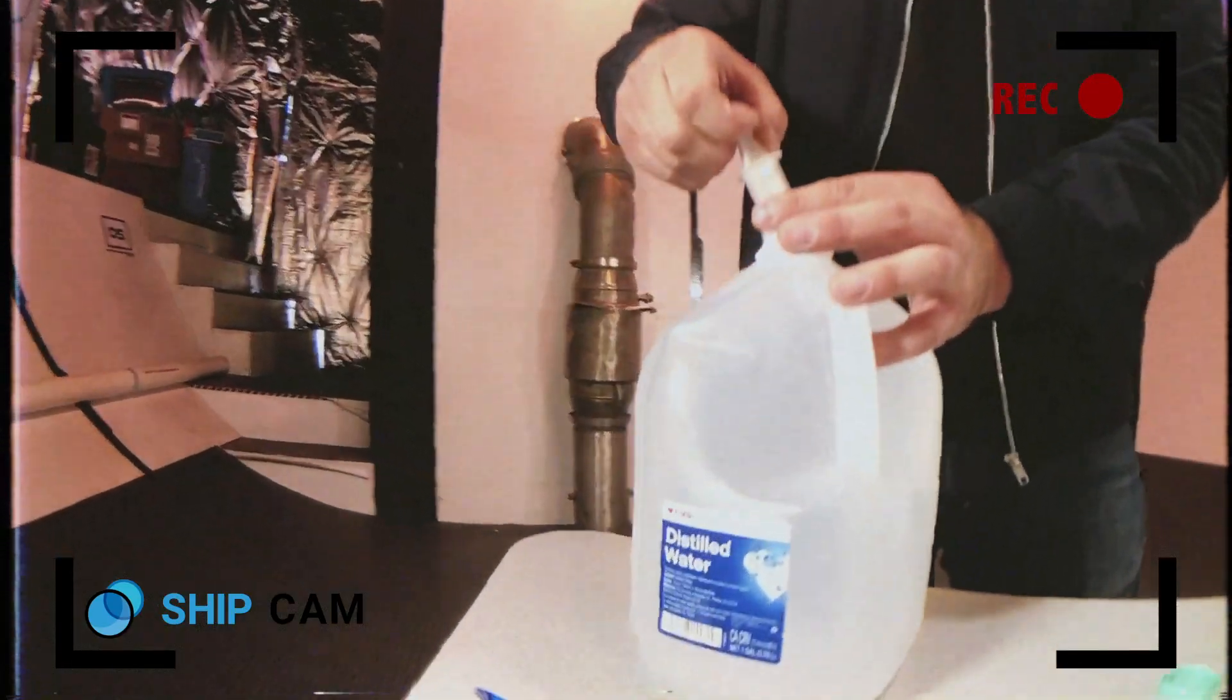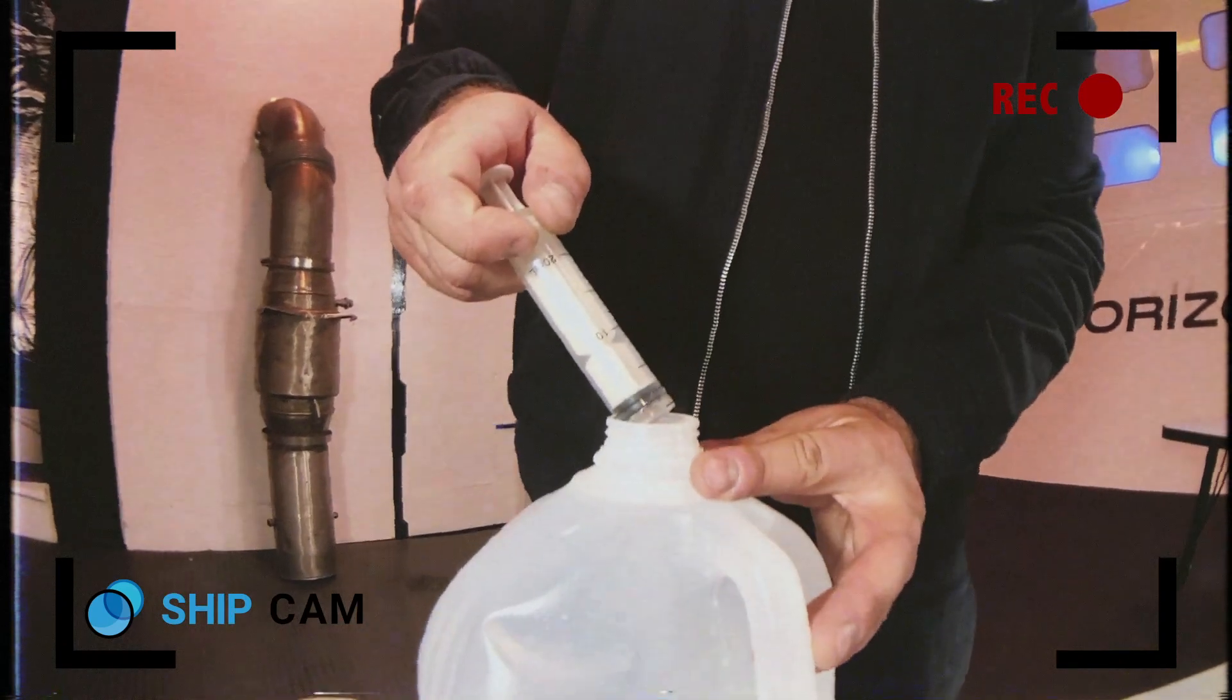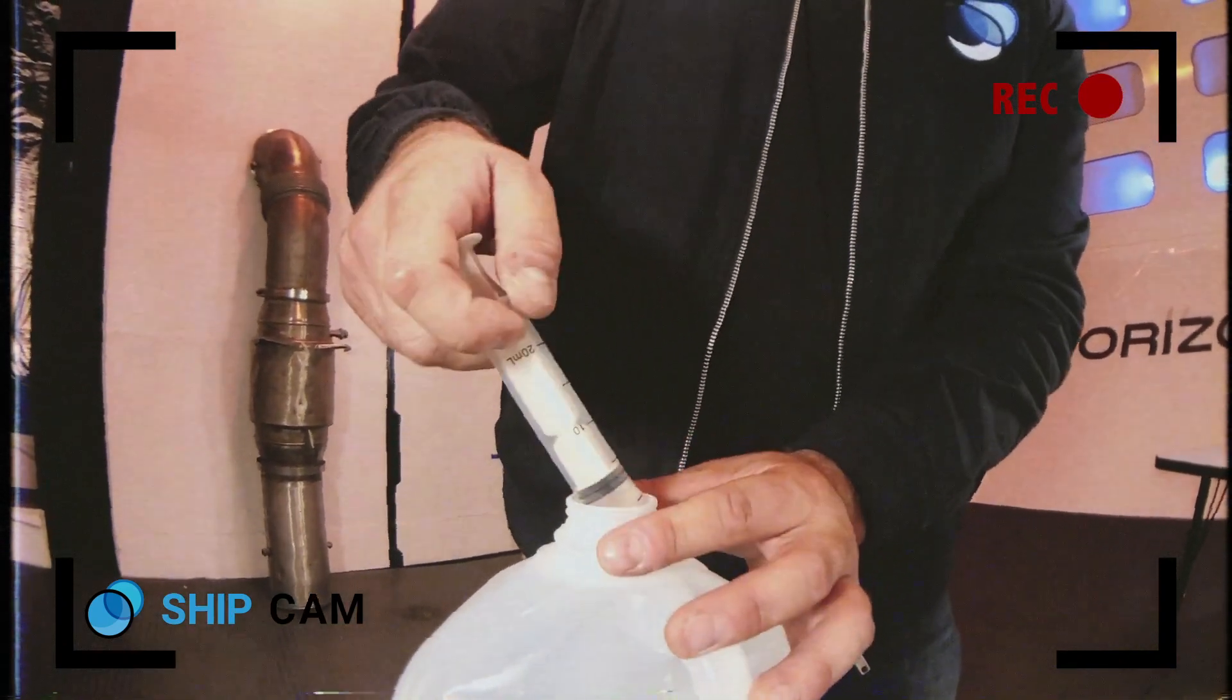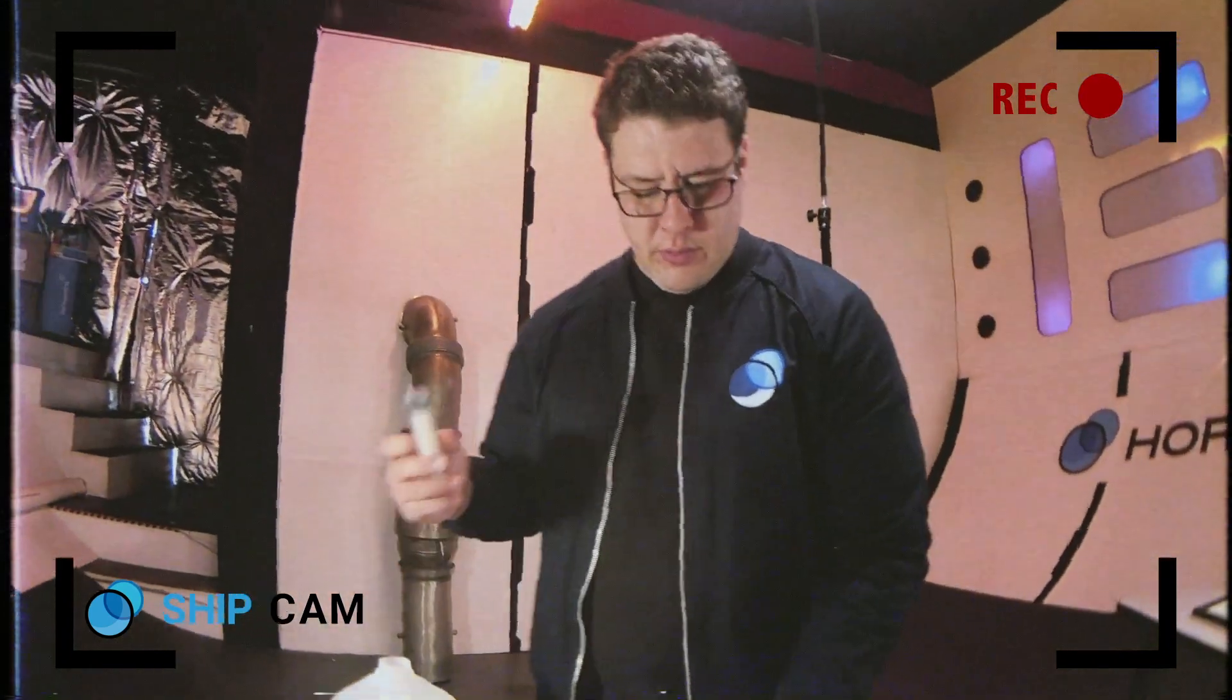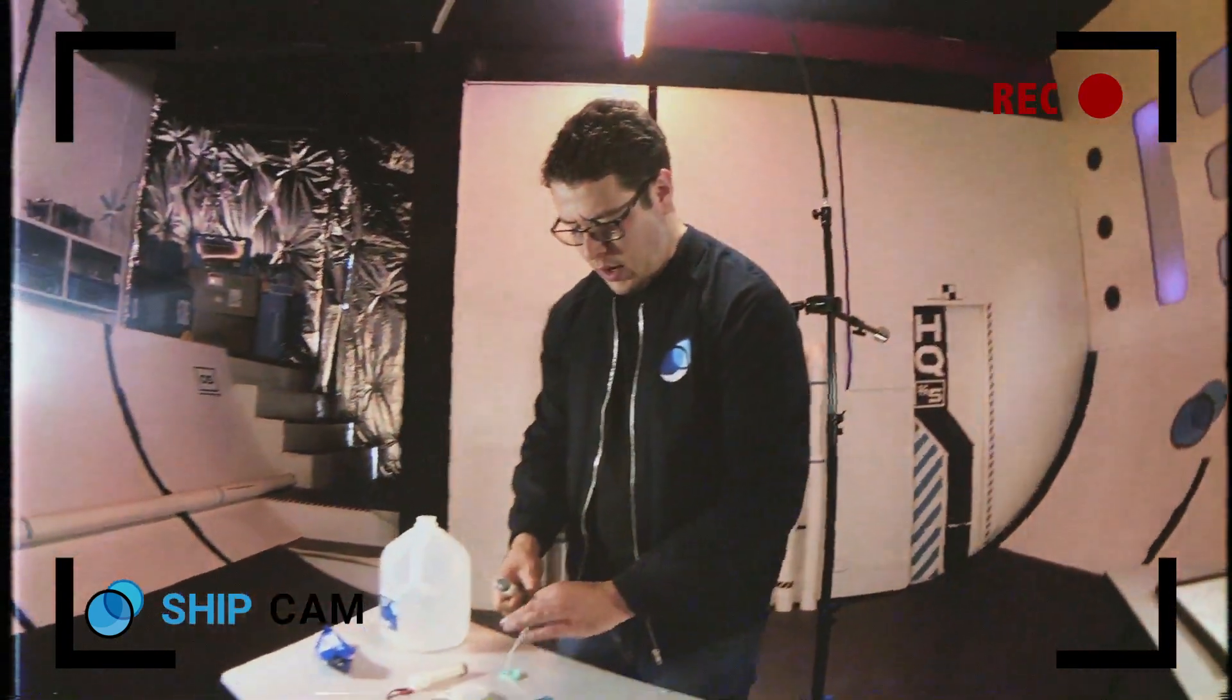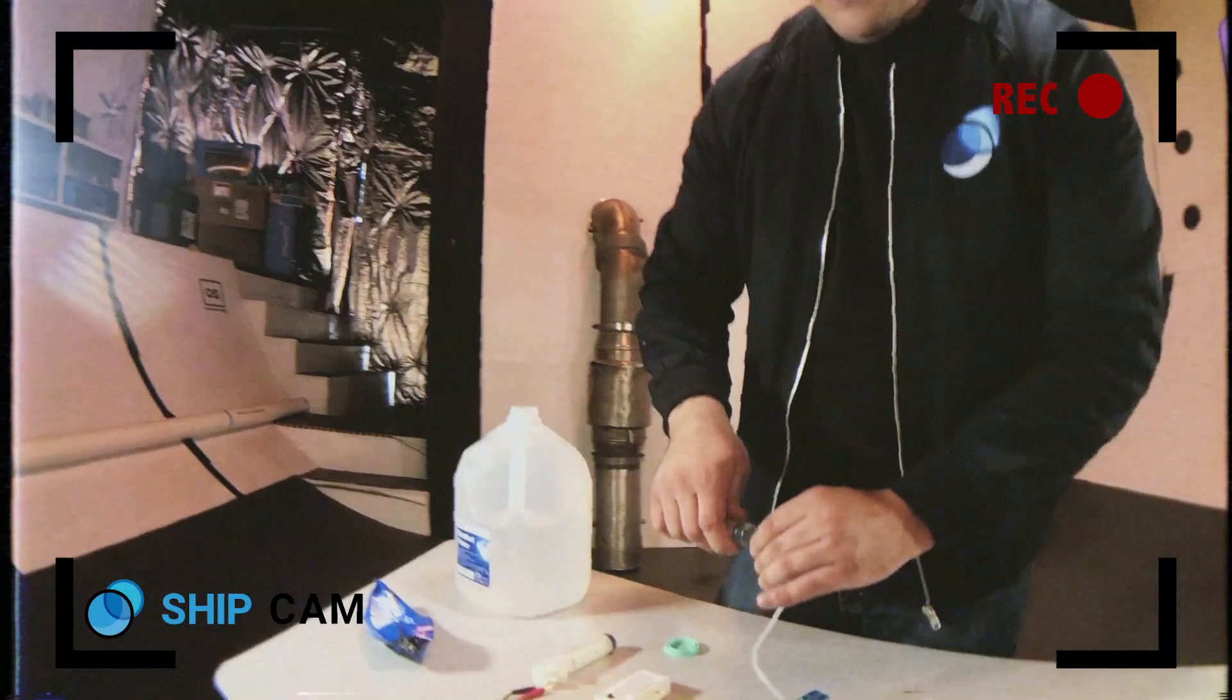So we're going to take our syringe. We're going to go into our distilled water here. And we only need about, let's get about two milliliters of water. We'll call it three, three milliliters of our distilled water. And I'm going to plug this first syringe into our hydrogen side.